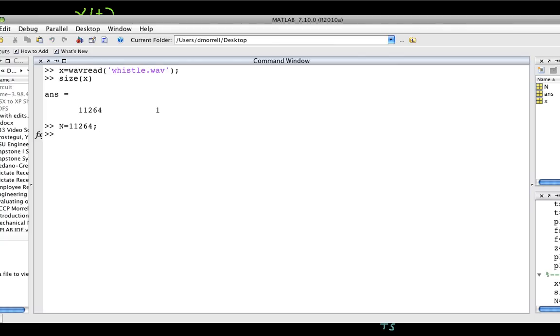Now, I also know because I used, well, because of the program that I used to record the whistle, that the sampling frequency is 44.1 ks per second. This is the sampling rate that CDs use, by the way. And from this, then, I can compute T sub s as being equal to 1 over F sub s.